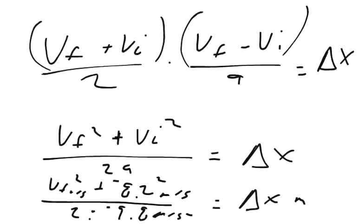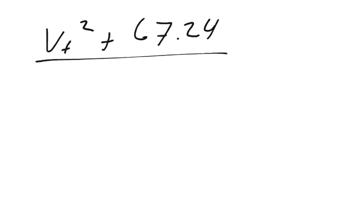So let me go ahead and put in my calculator, 8.2 times 8.2, so this is going to equal 67.24, and I can put in 2 times negative 9.8, which is negative 19.6. So, what I have right now is, I have my final velocity squared, plus 67.24, divided by negative 19.6, equals my change in location, if you remember from the problem, is 29.8 meters.